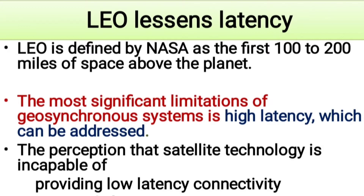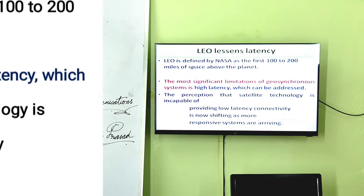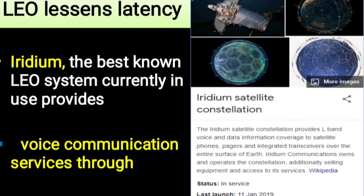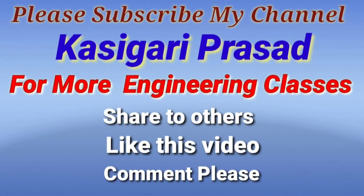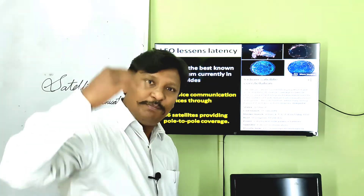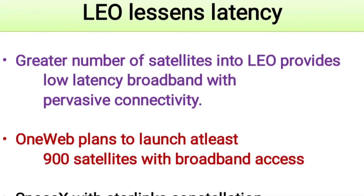The most significant limitation of geosynchronous satellite systems is high latency, which can now be addressed. The perception that satellite technology is incapable of providing low-latency connectivity is shifting as more responsive systems arrive. Iridium is the best known LEO system currently in use, providing voice communication services. The Iridium constellation consists of nearly 66 satellites and provides pole-to-pole coverage. A constellation of small LEO satellites placed in orbit can achieve this global coverage.